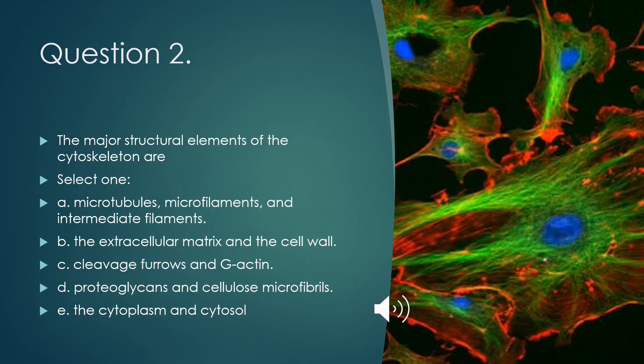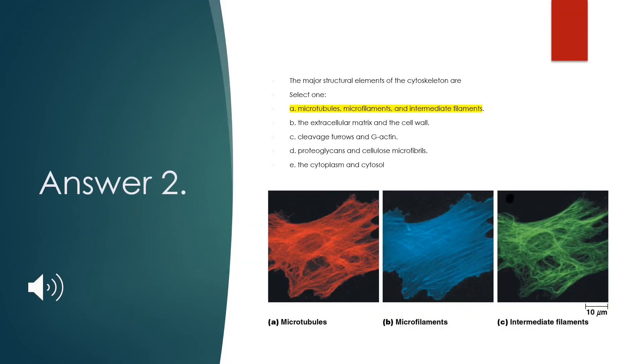Question 2: The major structural elements of the cytoskeleton are — select one: A. microtubules, microfilaments, and intermediate filaments; B. the extracellular matrix and the cell wall; C. cleavage furrows and G-actin; D. proteoglycans and cellulose microfibrils; or E. the cytoplasm and cytosol. The correct answer is A — microtubules, microfilaments, and intermediate filaments.